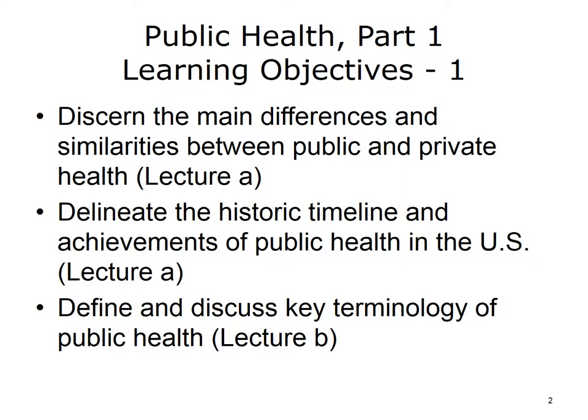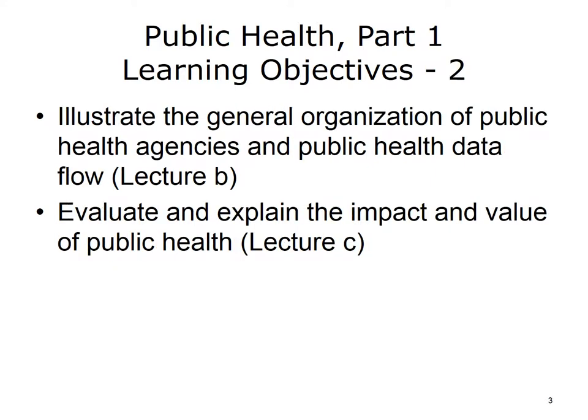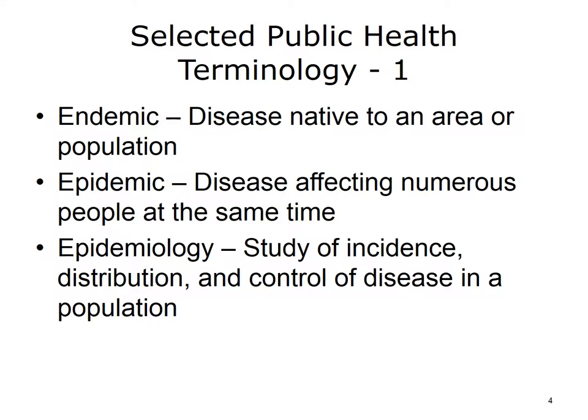The objectives for Public Health, Part 1, are to: discern the main differences and similarities between public and private health; delineate the historic timeline and achievements of public health in the U.S.; define and discuss key terminology of public health; illustrate the general organization of public health agencies and public health data flow; and evaluate and explain the impact and value of public health. This lecture discusses public health terminology and organization.